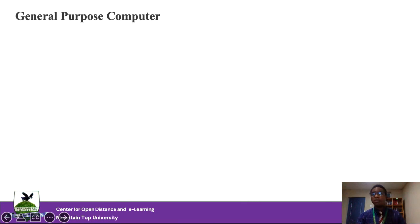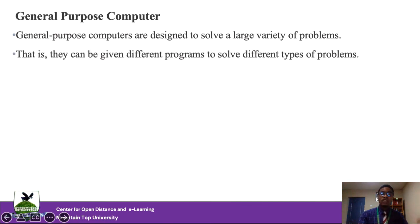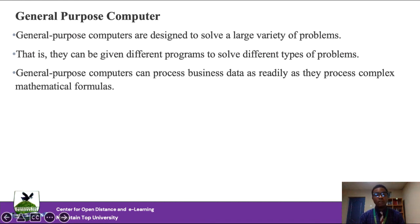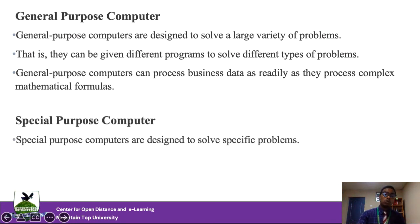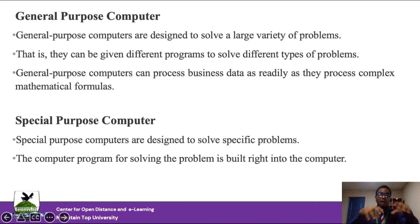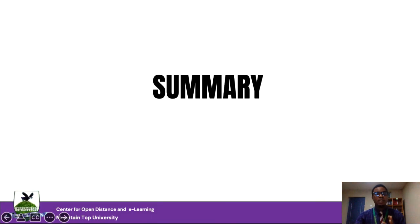There are two major classifications in terms of versatility. We have the general-purpose computer — which can be used to solve a wide variety of problems, given different programs for different tasks. Your personal computer is a general-purpose computer: it can watch movies, play music, type documents, and browse the internet. On the other hand, special-purpose computers are built for a particular purpose only — for example, a robot on an assembly line that can only assemble a specific part of a vehicle, not perform any other task.